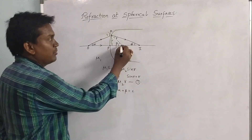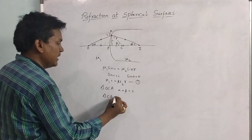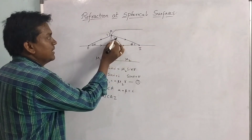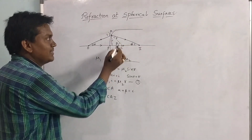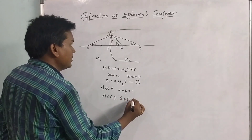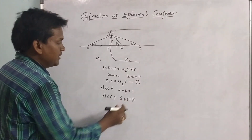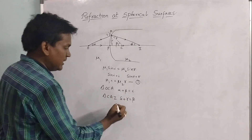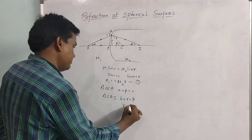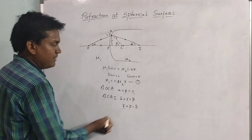Similarly, we can observe another triangle CAI. In triangle CAI, delta and r are interior angles, and beta is the exterior angle. So we can write delta + r = beta, which gives us r = beta − delta. Now we have expressions for both i and r.